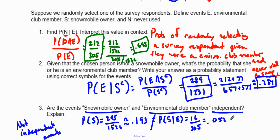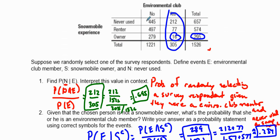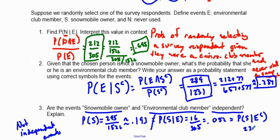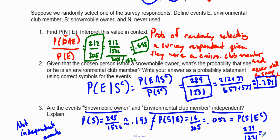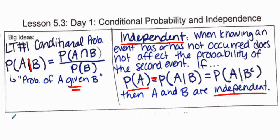We can verify this by checking S given not E. Given you are not environmental and you own a snowmobile, that's 279 divided by 1,221, which equals 0.187 or 0.188. These values are not equal because these probabilities are not the same.